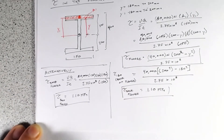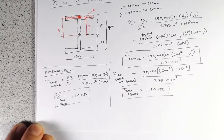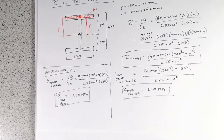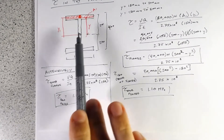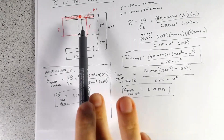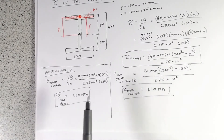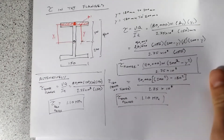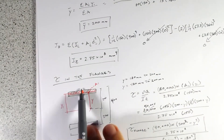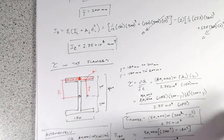As discussed in the last video, if you don't need to know the full distribution profile and only care about values at specific points, it's much quicker to simply compute A·y for a given area rather than deriving the full equation. Now that we have the flanges covered, we need to come up with an equation for the web.